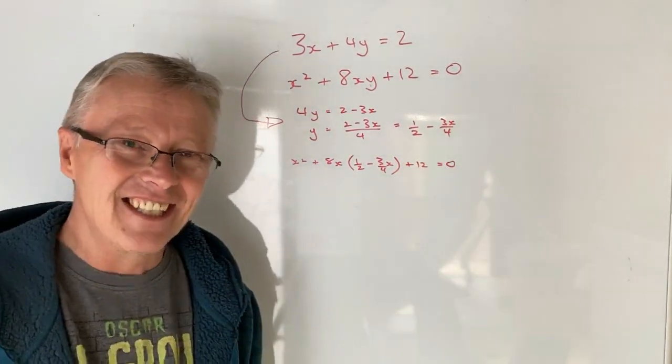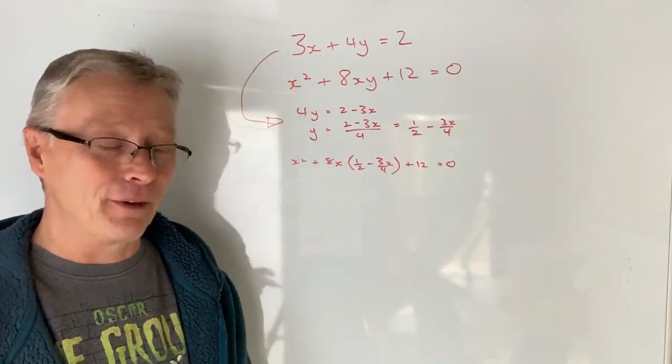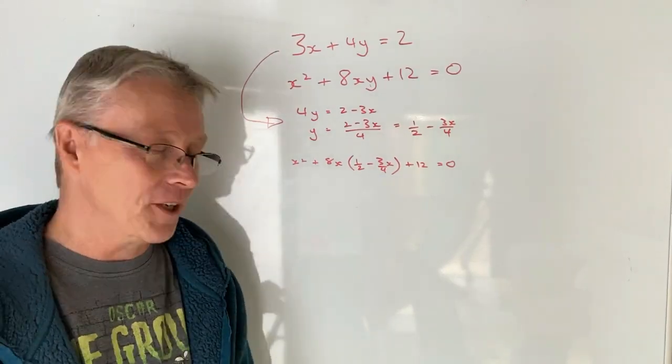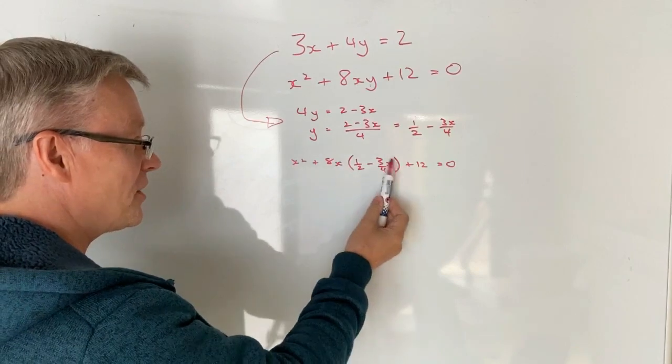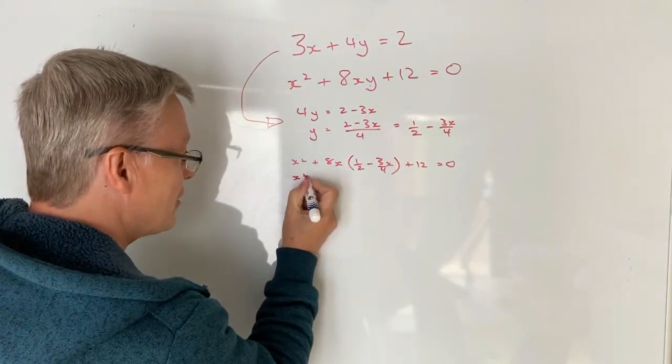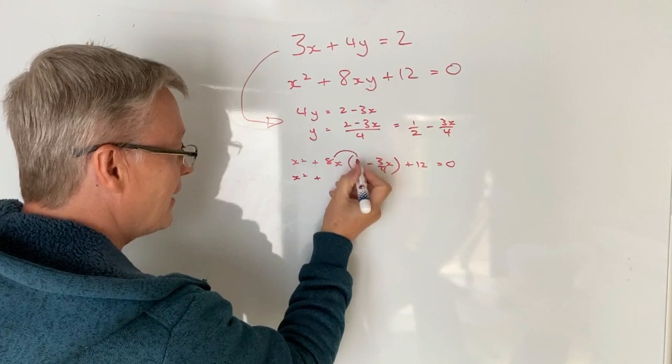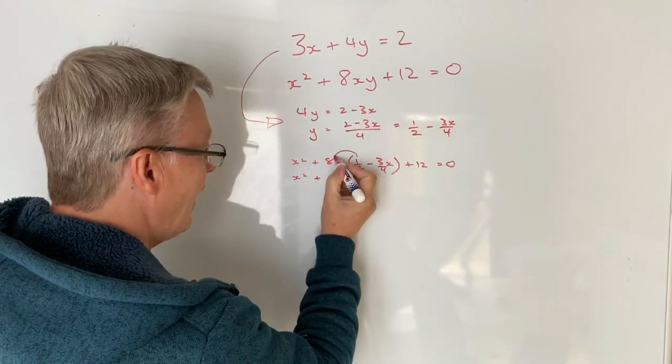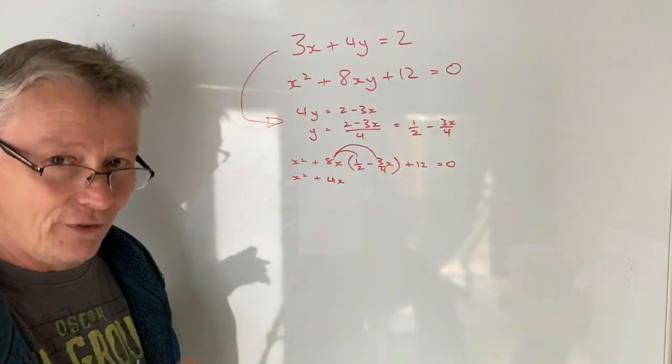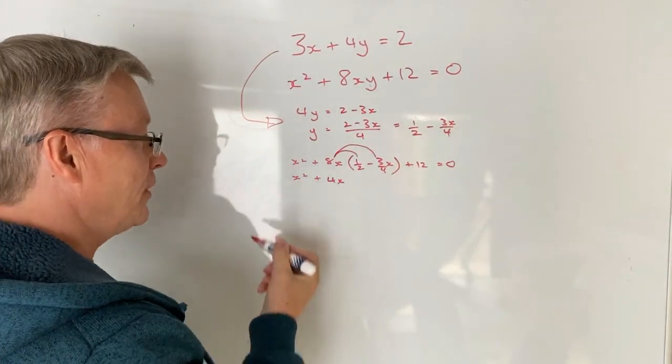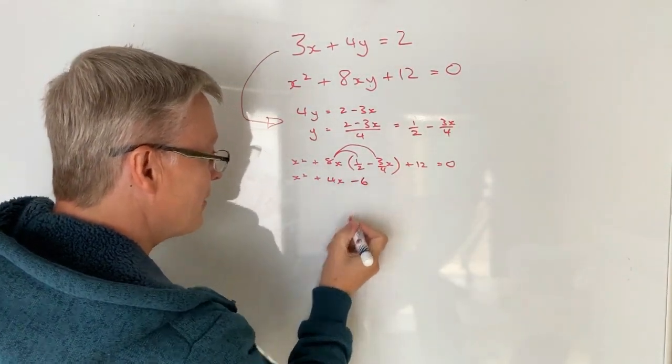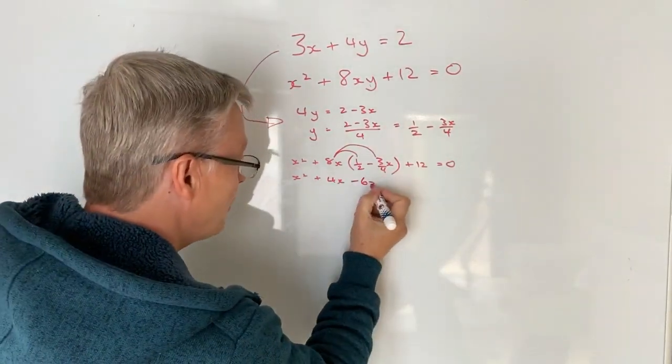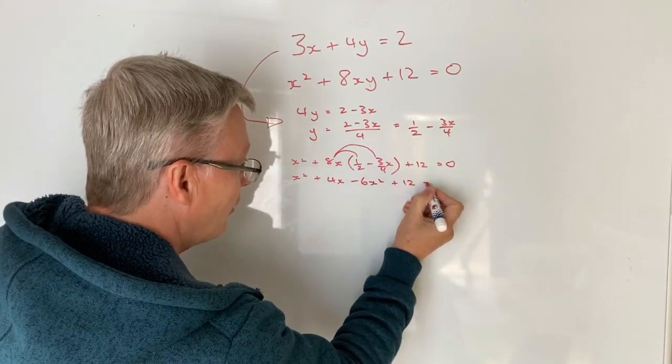Oh dear. Okay, so it looks a little bit scary at the moment to try to kind of work through but hopefully it's going to work out in terms of this particular problem. So the first thing I'm going to do is expand these brackets. I'm going to leave this x squared. Now I've got 8x times a half. Well that's fairly easy. That's just going to be 4x. And then I've got 8x times minus 3 quarters x. So minus 3 quarters of 8 is going to be minus 6 because 3 quarters of 8 is 6. And then I've got x times x which is x squared plus 12 equals 0.